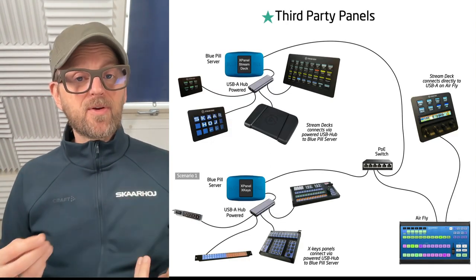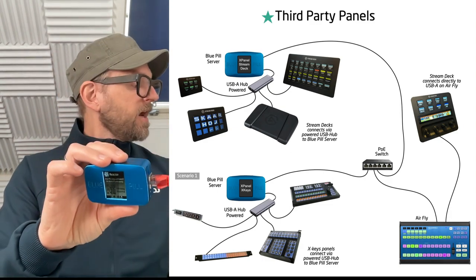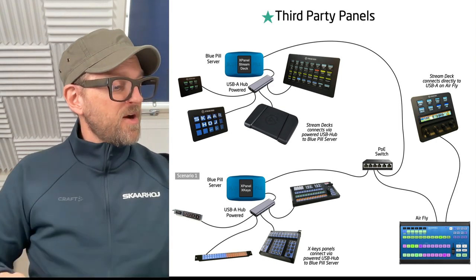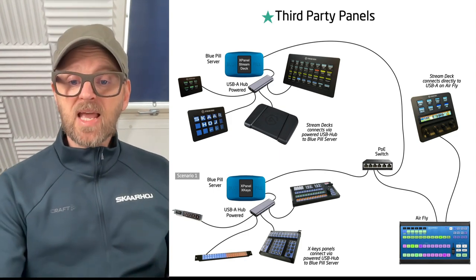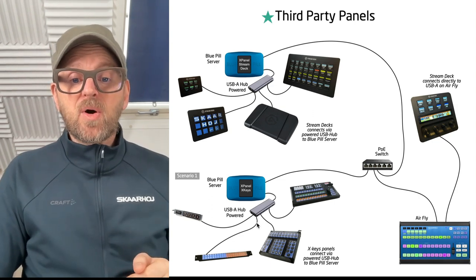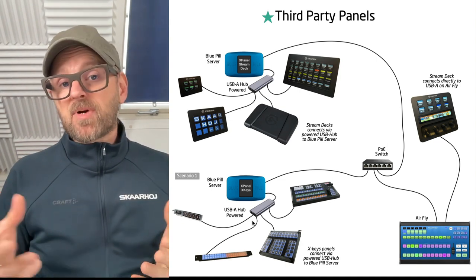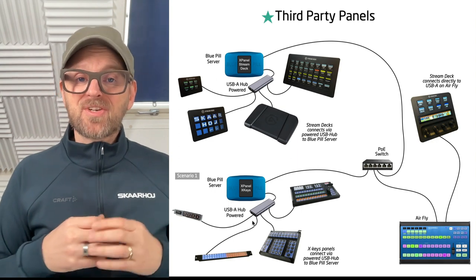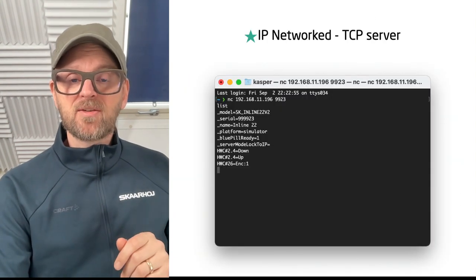You can also integrate third-party panels. We've made ways to take a blue pill and connect a Stream Deck device to it, then make it available over the network. You need the blue pill and a license for the software that integrates with the Stream Deck, but you can even use a USB hub to have multiple devices connected this way. Xkeys is another example of an external product that can be integrated. Our vision is to invent the future of media production control — not only Skyhoy products, but a mix of many different things — and RawPanel is a central way to do that.